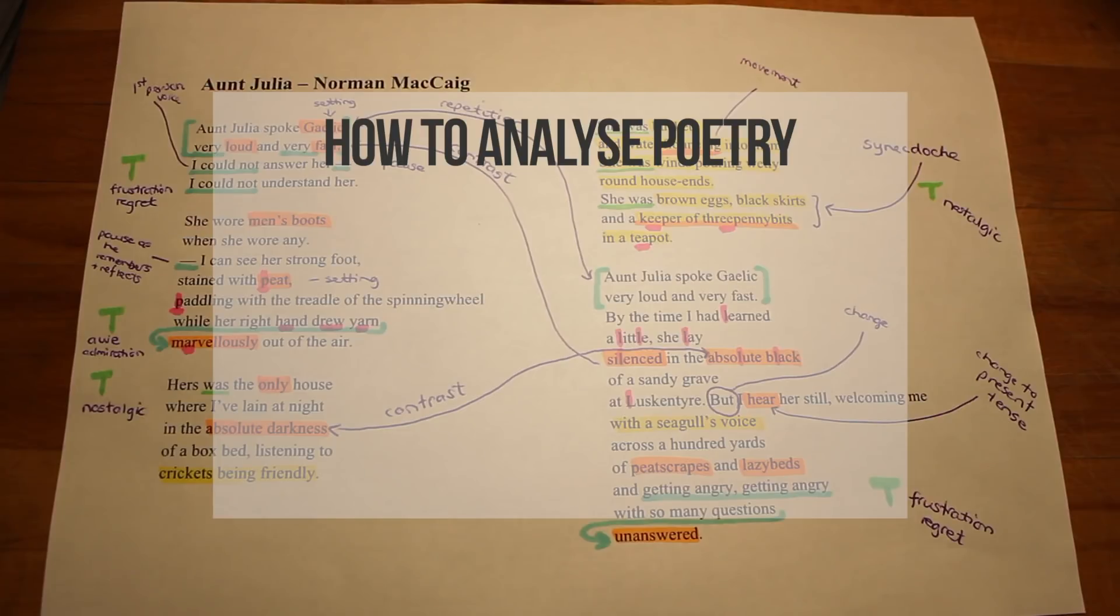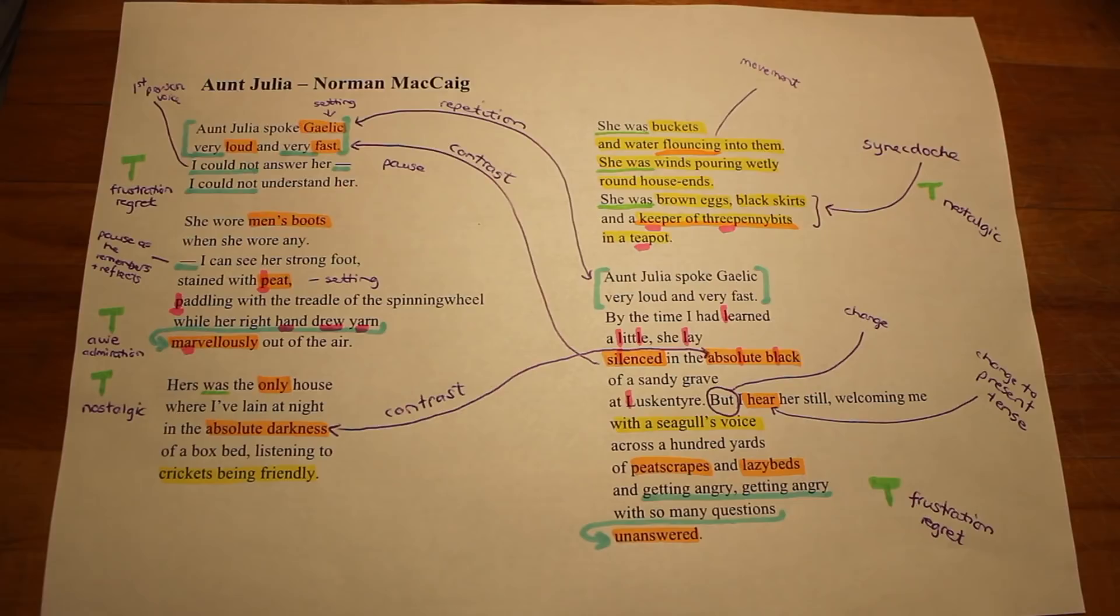Here's an episode of How to Analyse Poetry from the Learning Cauldron. Today we'll be looking at Norman MacCaig's poem Aunt Julia. Analyzing poetry involves identifying and dissecting the literary techniques that the poet uses effectively to explore the themes of a poem.